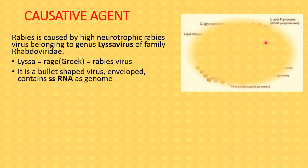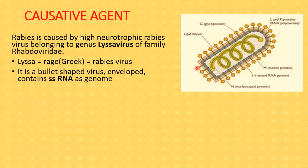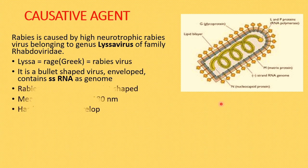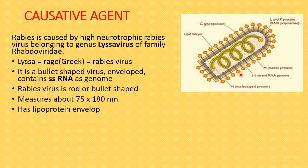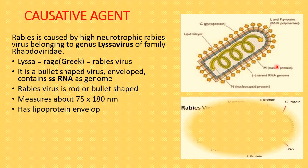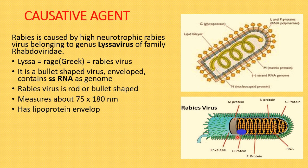The rabies virus is a bullet-shaped, enveloped virus. Its genetic material is a single-stranded RNA. The virus measures approximately 75 × 180 nanometers. The envelope is made up of lipoprotein — that is, lipid plus protein. As you can see here, there is an envelope and knob-like spikes projecting from its surface.